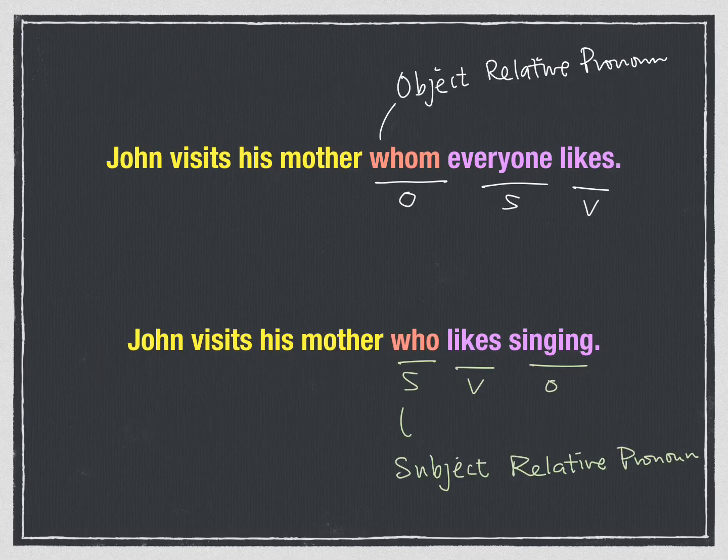So this is the major difference between who and whom. Because whom is used to replace the object of the sentence — the ending part — we can call it an object relative pronoun. And because who replaces the subject — the beginning part — we can call it a subject relative pronoun.